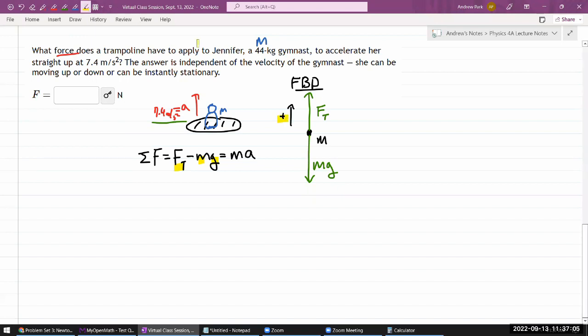And that's going to be equal to mass times acceleration. I'm kind of eyeing this positive direction, direction of acceleration, that my acceleration here is expected to be positive. I have this equation, and I think I have only one unknown, the force of the trampoline. That's what's being asked for. I can just solve for it. Add both sides by mg. The force of the trampoline is ma plus mg.